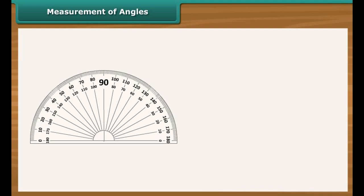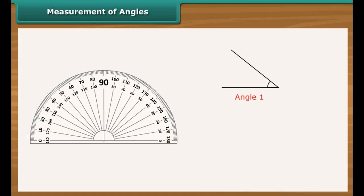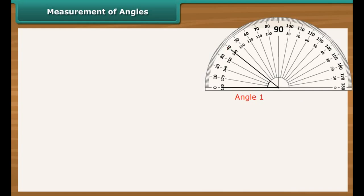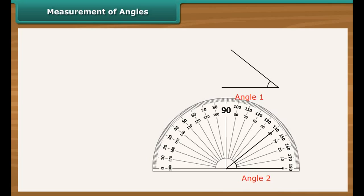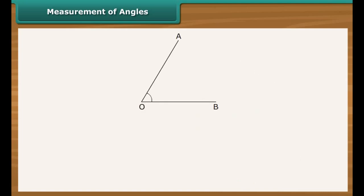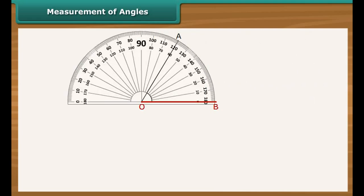Measurement of angles: Let us now learn to measure angles with a protractor. A protractor is a semi-circular geometric instrument with markings from 0 to 180 — these markings represent degrees. The outer markings are used to measure an angle whose vertex is formed on the left, and the inner markings for a vertex formed on the right. To measure angle AOB: place the protractor on ray OB, ensure the horizontal line coincides with OB and its midpoint rests on vertex O. Check the inner marking that coincides with ray OA — it is 60. Therefore, the measure of angle AOB is 60 degrees.